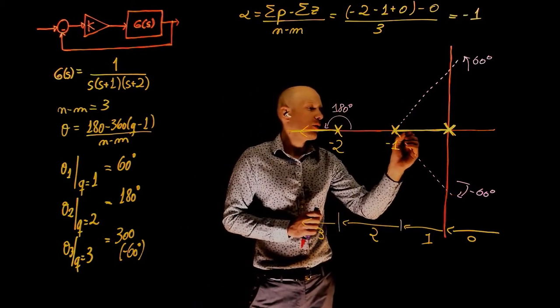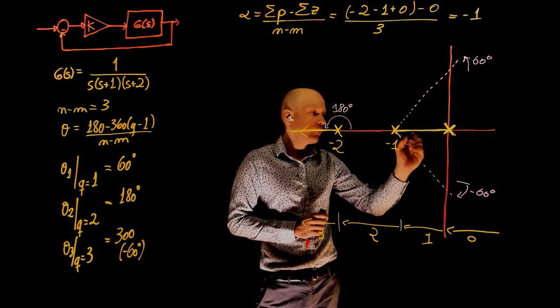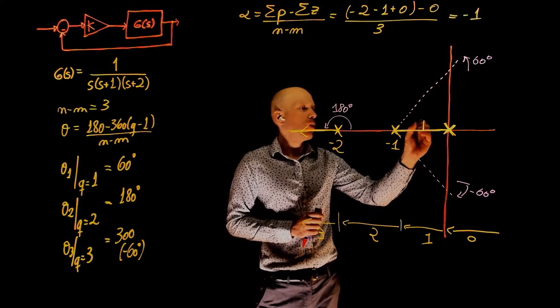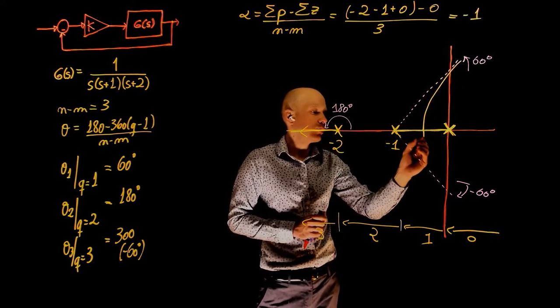So this poles now will come together, will break away. One goes up, the other one goes downwards.